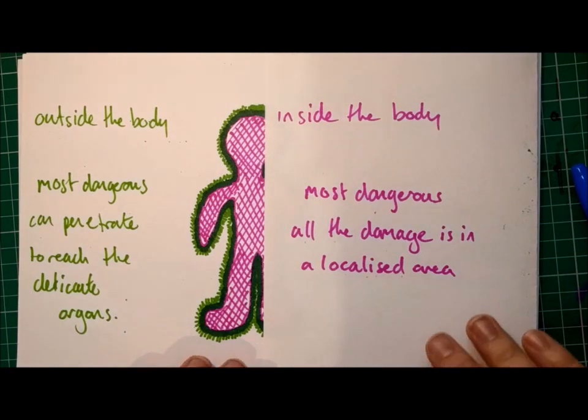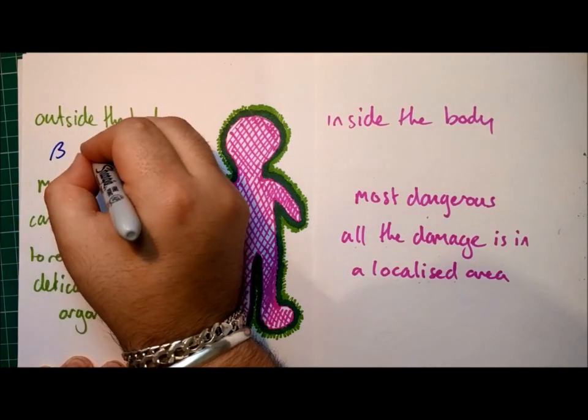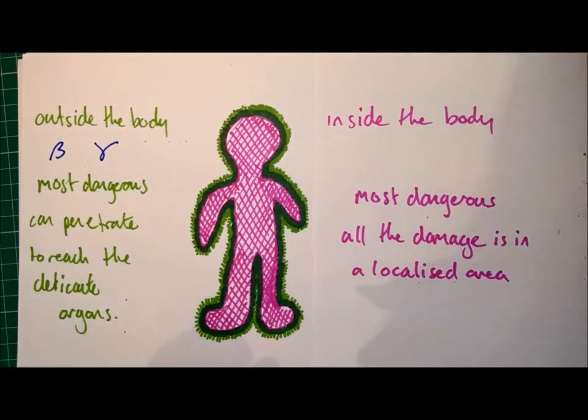Okay, so which are more dangerous? Well, outside the body you'll find that beta radiation and gamma radiation are the two most dangerous. Because they can penetrate into the body and can reach the delicate organs and therefore can harm them.